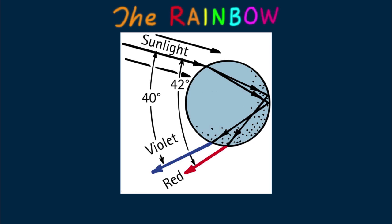Reaching the opposite side of the drop, each color is partly refracted out into the air (not shown here) and partly reflected back into the water. Arriving at the lowest surface of the drop, each color is again reflected and refracted into the air. This second refraction is similar to that of a prism, where refraction at the second surface increases the dispersion already produced at the first surface.